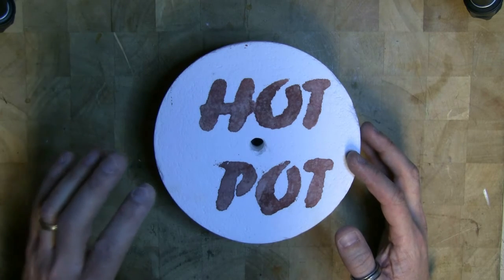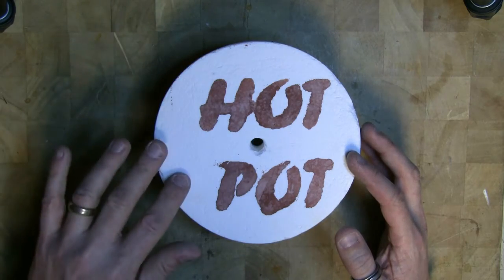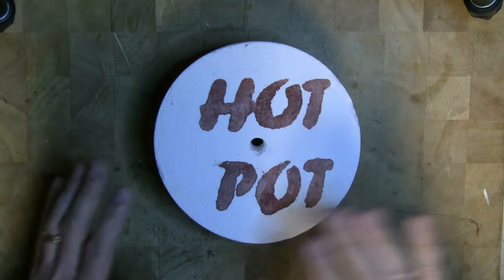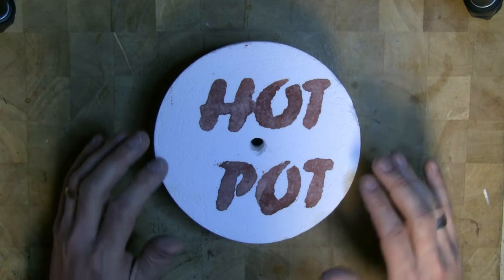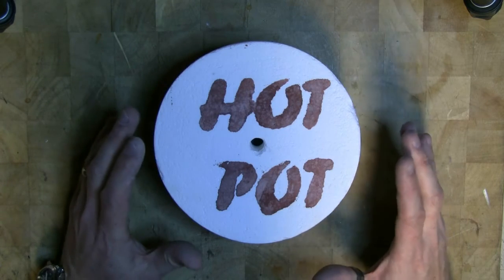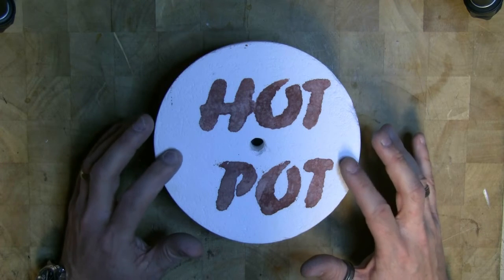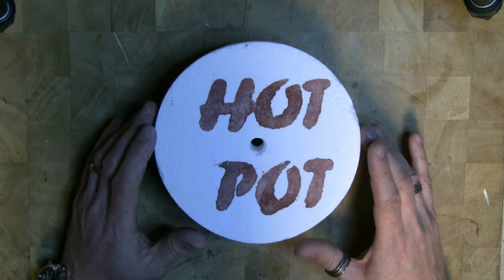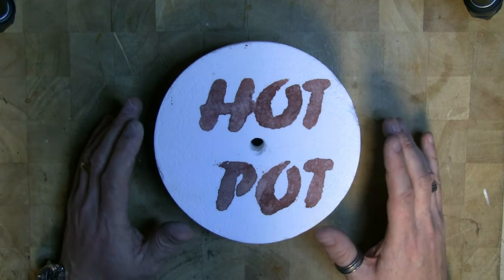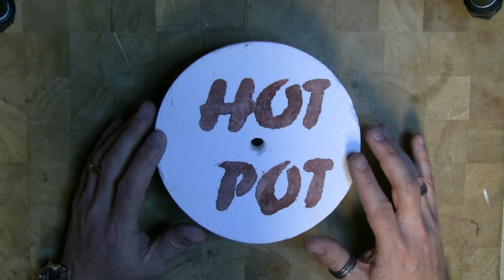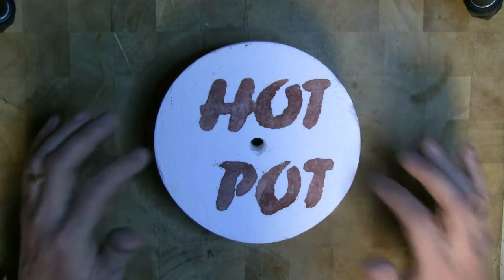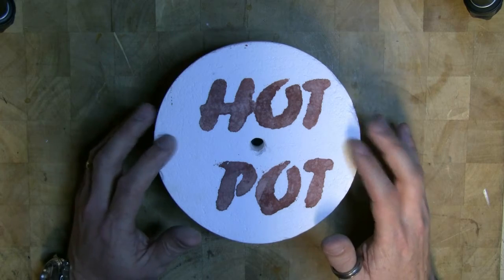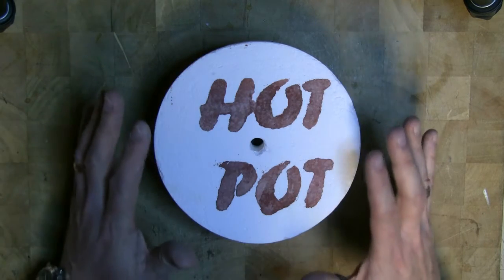The problem with that is you don't get the annealing process. One of the important factors of fusing glass is not the actual melting but the cooling, so it anneals properly and you get a regular crystalline structure which makes the glass quite strong. With this process, because the glass cools quite quickly, you get a chaotic structure which makes the glass very brittle, not only prone to breaking as it comes out but also afterwards as temperatures fluctuate.